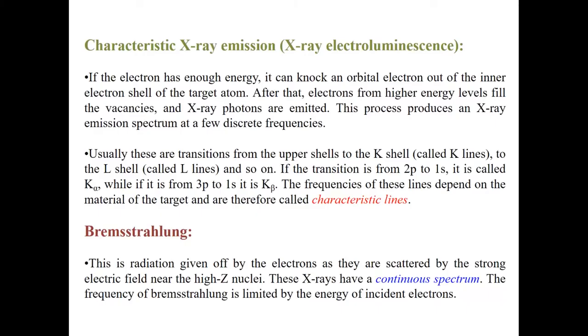Moving on. Characteristic X-ray emission, sometimes also called X-ray electroluminescence. Basically what happens is when the cathode ray electrons that are hitting the target, when they have sufficiently high energy, they knock out the orbital electrons from the inner shells. When that happens, the electrons from the higher energy levels, they come down to the lower energy vacancy of that particular electron.